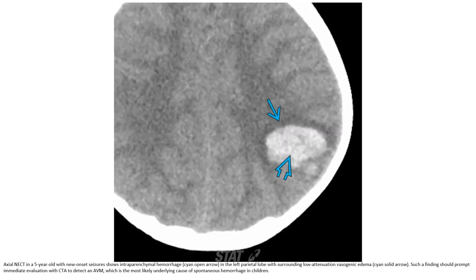This is non-contrast enhanced CT in a 5-year-old with new-onset seizure. There is intraparenchymal hemorrhage in the left parietal lobe with surrounding low-attenuation vasogenic edema. Such a finding should prompt immediate evaluation with CTA to detect an AVM, which is the most likely underlying cause of spontaneous hemorrhage in children.